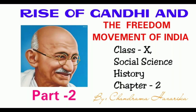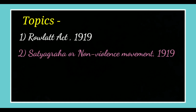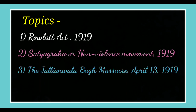Hello, dear students. Today in this video, I am going to discuss Class 10 Social Science, History Chapter 2: Rise of Gandhi and the Freedom Movement of India, Part 2. Today's topics are: number one, the Rowlatt Act 1919; number two, the Satyagraha or Non-violence Movement 1919; number three, the Jallianwala Bagh Massacre, April 13, 1919; and number four, the Khilafat Movement.